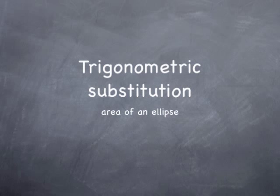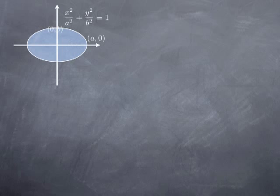To illustrate the technique of trigonometric substitution, we're going to use it to calculate the formula for the area of an ellipse. Consider an ellipse centered at the origin with long axis of length 2a and short axis of length 2b. The standard equation is x² over a² plus y² over b² equals 1. We want to calculate the area enclosed by that ellipse, which we can see as 4 times the red area under the graph from x equals 0 to x equals a.